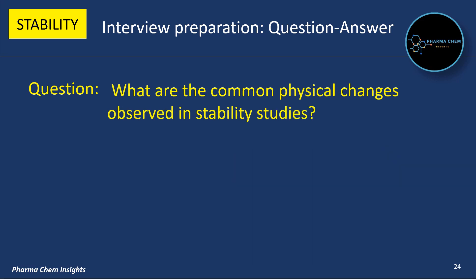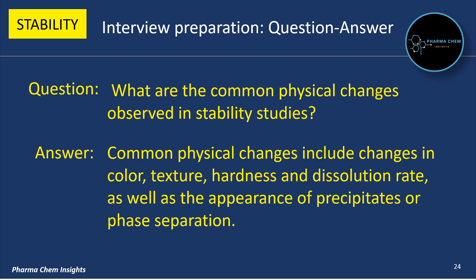Next question: What are the common physical changes observed in stability studies? Common physical changes include changes in color, texture, hardness, and dissolution rate, as well as the appearance of precipitates or phase separations.